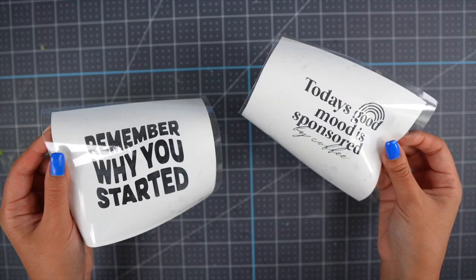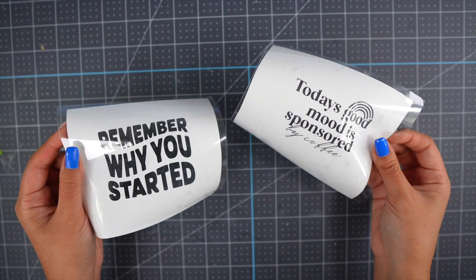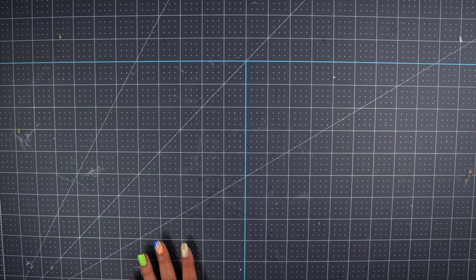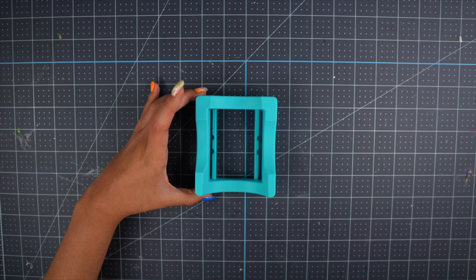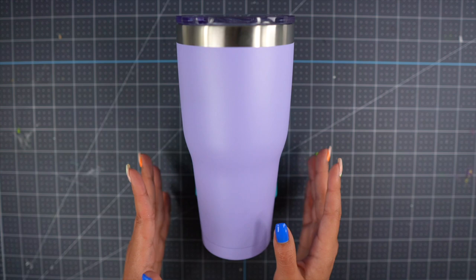Now that we have these templates ready we can apply them onto the tumblers. Before you get started on the citrus drip process make sure you have something that's protecting your table. You don't want to accidentally remove any paint from your actual table. This is where the tumbler holder comes in handy. I'm just going to place it down and then put my tumbler on top. This is going to prevent the tumbler from rolling around the table. I'm going to wipe down the surface using some rubbing alcohol.